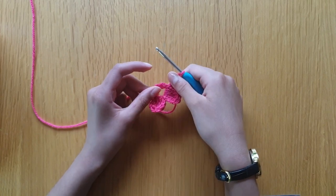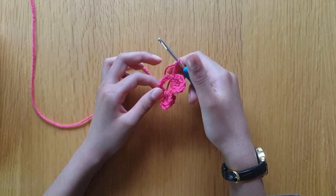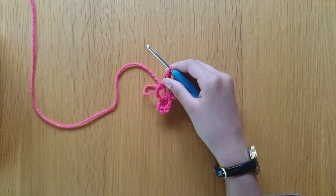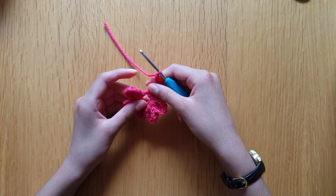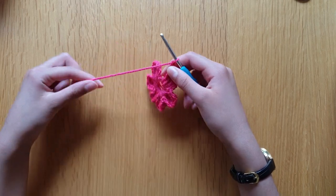Did a slip stitch and chain three. Now we're going to do four more petals and I'll meet you back on the sixth one. Okay guys, so I've done my five petals, I've done my six, and I've chained two. I also cut off a big tail end.